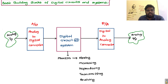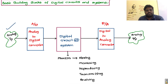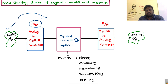The next topic is basic building blocks of digital circuits and systems. The block diagram is shown in the figure. There are three blocks: analog to digital converter, digital circuit or digital system, and digital to analog converter. The input is analog, and we cannot apply it directly to the digital circuit because digital systems can understand only digital data. So we need to convert this analog input to digital input using the analog to digital converter, and then the digital input is applied to the digital circuit.